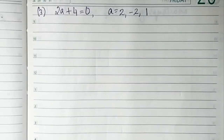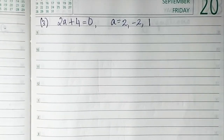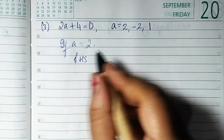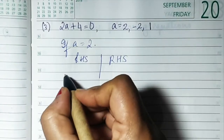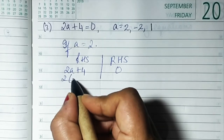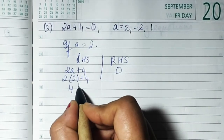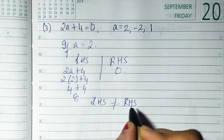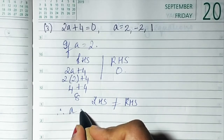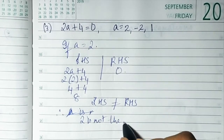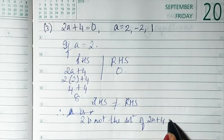Sum number 3: the equation is 2A + 4 = 0, with values A = 2, -2, and 1. If A = 2: LHS is 2A + 4 and RHS is 0. Substituting: 2 × 2 + 4 = 4 + 4 = 8. Since 8 ≠ 0, LHS is not equal to RHS. Therefore, A = 2 is not the solution of 2A + 4 = 0.